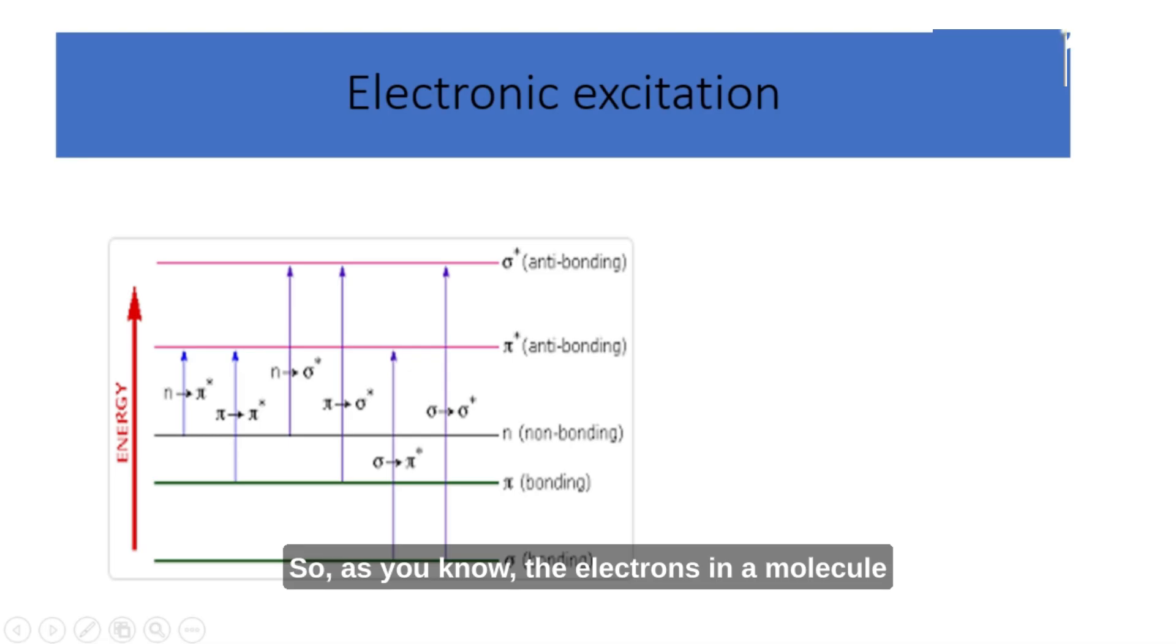So, as you know, the electrons in a molecule can be of one of three types, namely single bond sigma, multiple bond pi, or non-bonding. Sigma bond electrons have the lowest energy level and are the most stable electrons. These would require a lot of energy to be displaced to higher energy levels. As a result, these electrons generally absorb light in the lower wavelengths of ultraviolet light, and these transitions are rare.